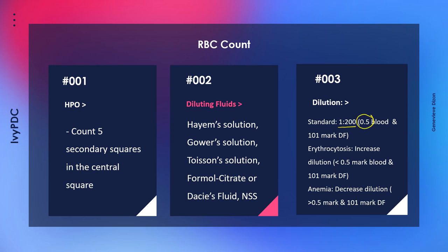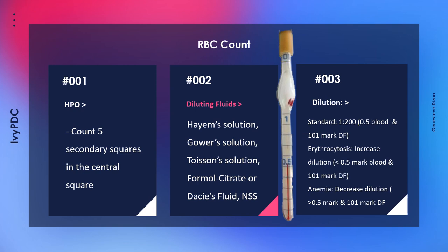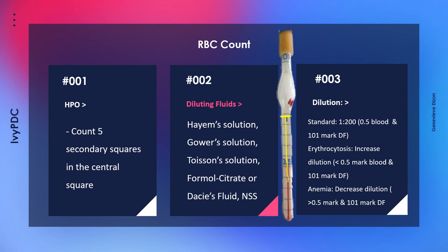The standard dilution for RBC is 1:200, prepared by aspirating blood up to the 0.5 mark and diluting fluid up to the 101 mark. In cases of erythrocytosis — an increased number of red blood cells — we increase the dilution by decreasing the amount of blood, aspirating from a lower mark while still filling to 101. In cases of anemia where there is a decreased RBC count, we decrease the dilution by increasing the amount of blood up to the 1 mark and aspirating fluid up to the 101 mark.